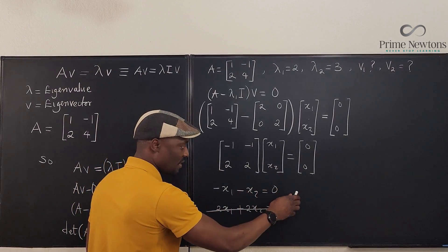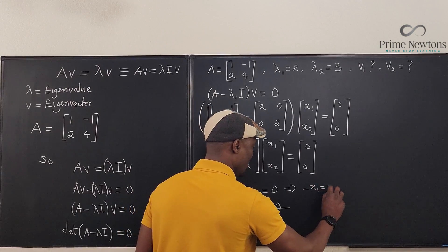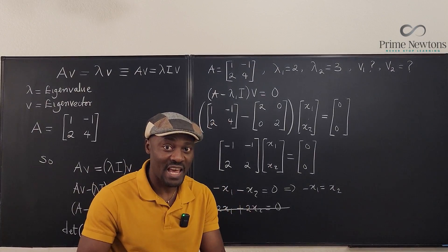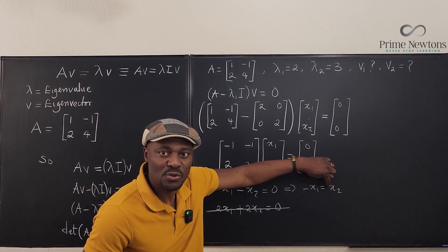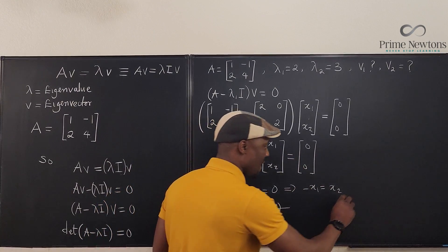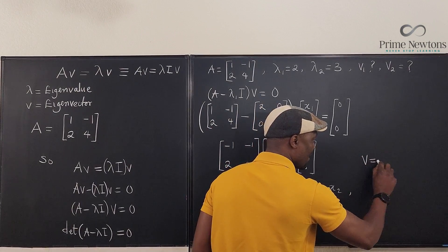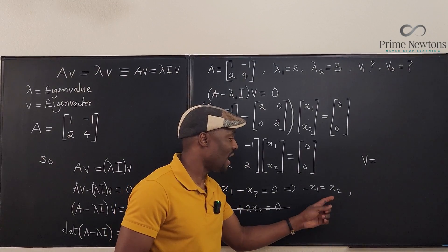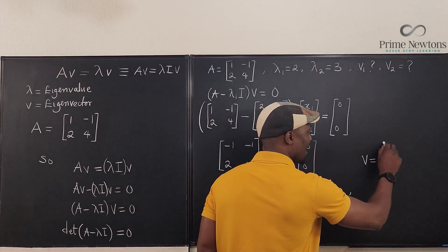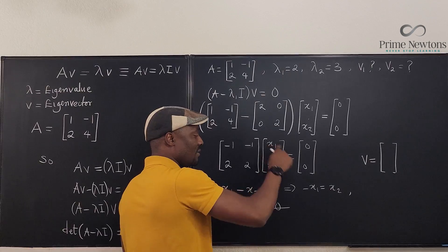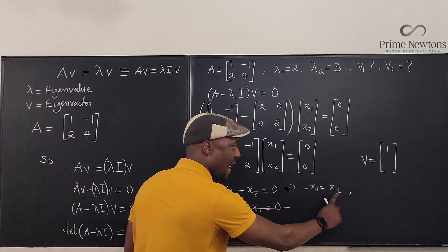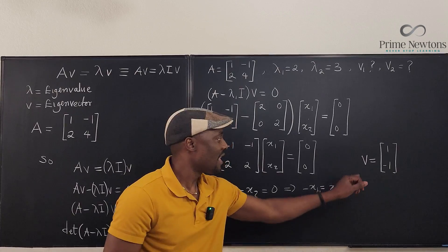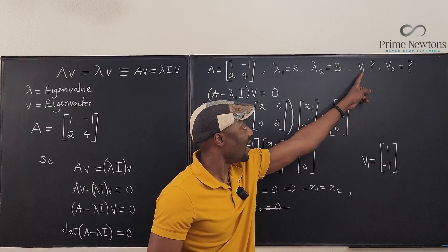If we set x₁ = 1, then x₂ = -1. So the eigenvector v₁ corresponding to λ₁ = 2 is the vector [1; -1]. Be able to recognize your eigenvector: set x₁ = 1, compute x₂ = -x₁ = -1, and that gives you v₁ = [1; -1].